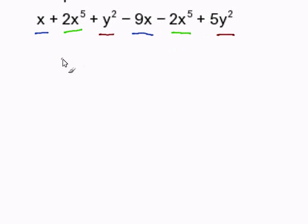Now we simply combine those terms. x plus negative 9x will get you negative 8x.